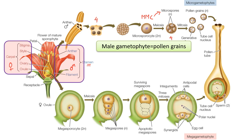Now let us see how the embryo sac is formed. This is the ovule, and this is an enlarged view. The ovule has integuments, and the opening is called the micropyle, while the opposite region is called the chalazal region — the region that attaches the ovule to the placenta. Inside the ovule, from the sporogenous tissue, the megasporocyte or megaspore mother cell undergoes meiosis, forming four megaspores.